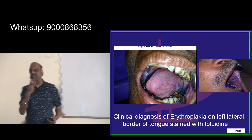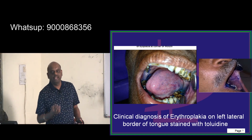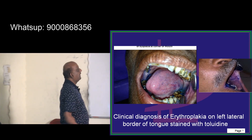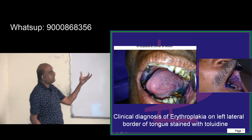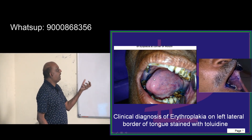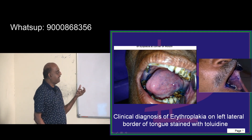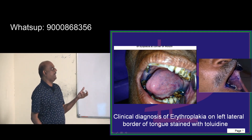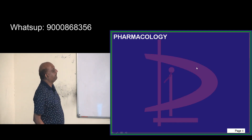India is the country where oropharyngeal cancer is very common. If there is an erythroplakia on the left lateral border of the tongue and you stain it with toluidine blue, this is how it typically looks.